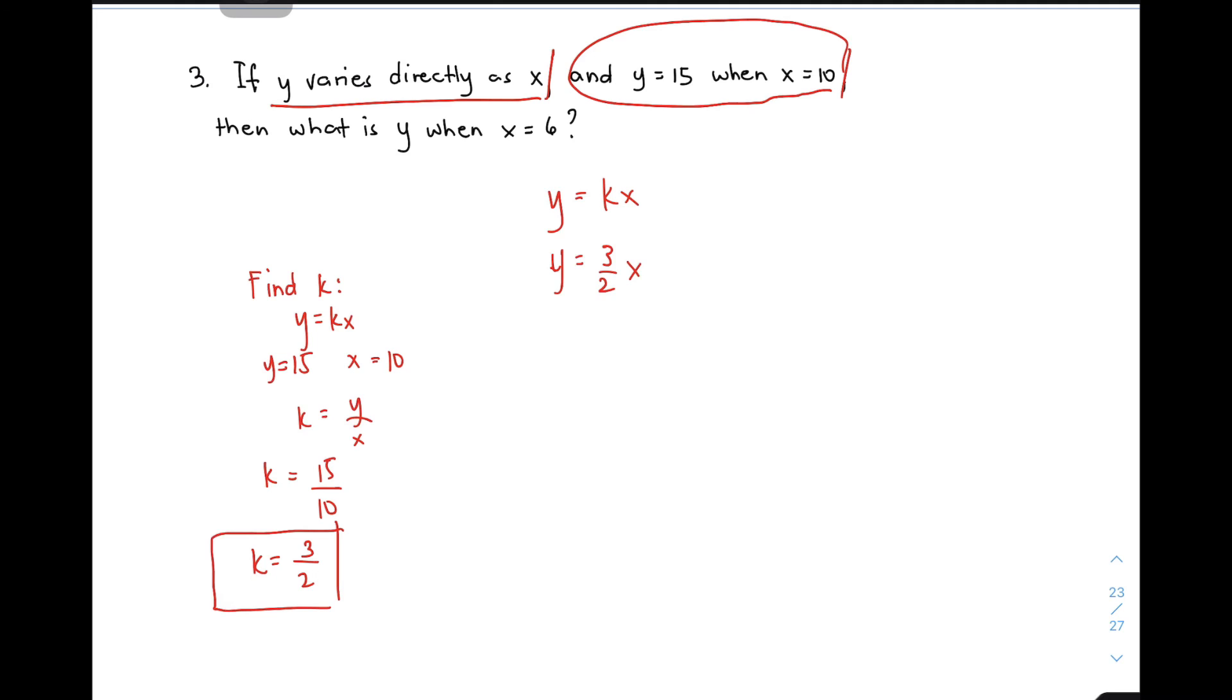For the main problem, what is Y when X is equal to 6? Find Y using the equation Y equals 3 over 2 X. Substitute the value of X, which is 6. You have Y equals 3 over 2 times 6. Simplifying 6 over 2 gives 3, or multiply 3 times 6 to get 18 over 2, and Y equals 9. This is the value of Y.